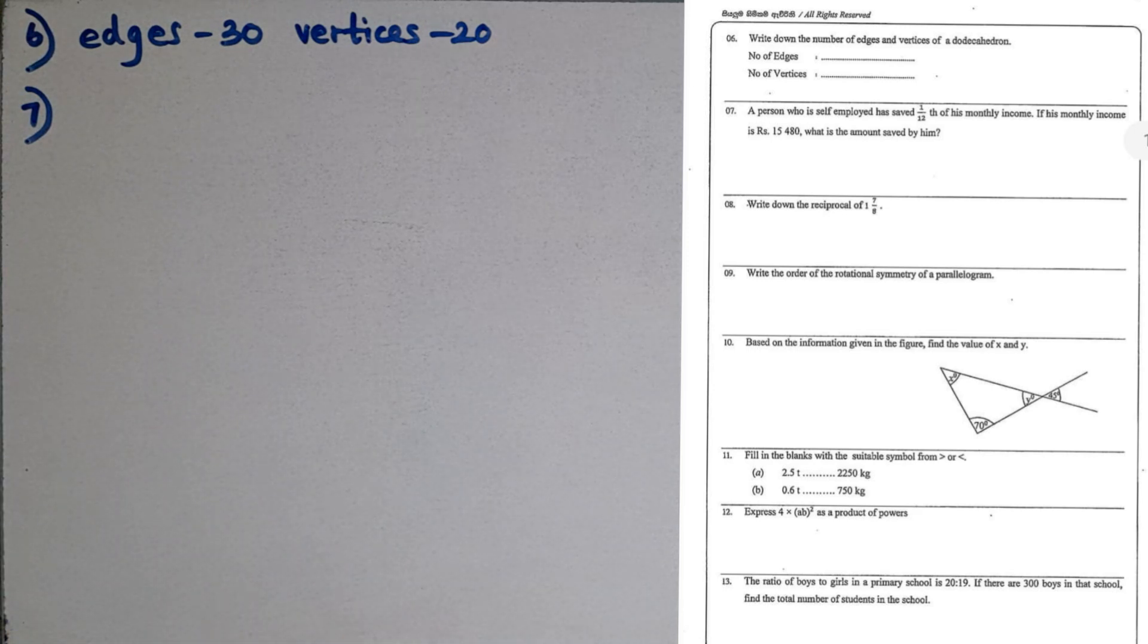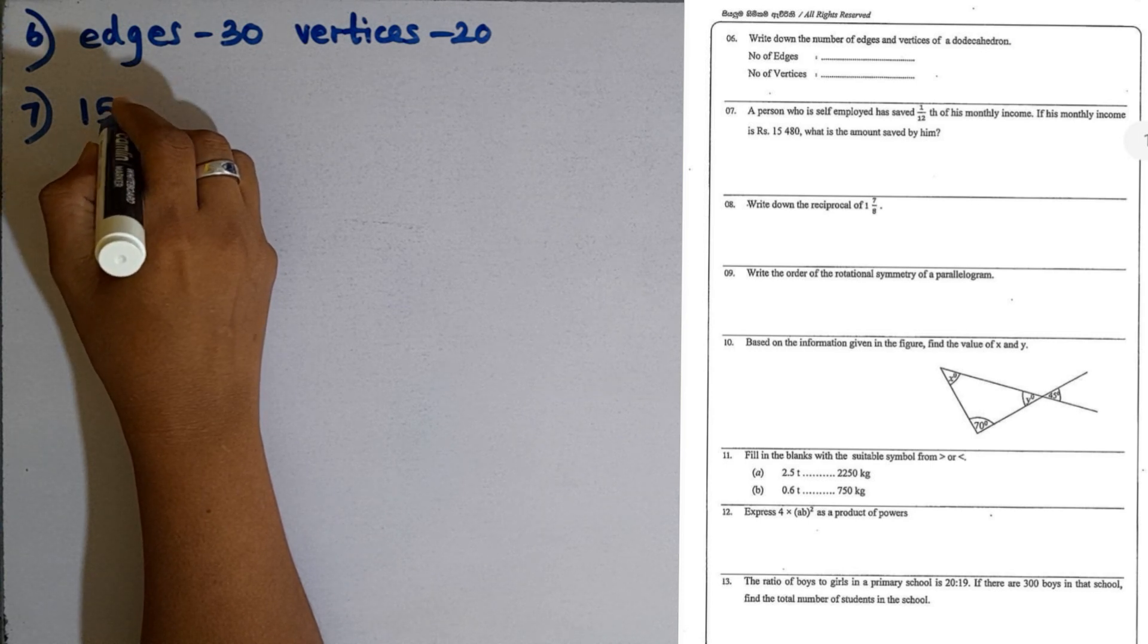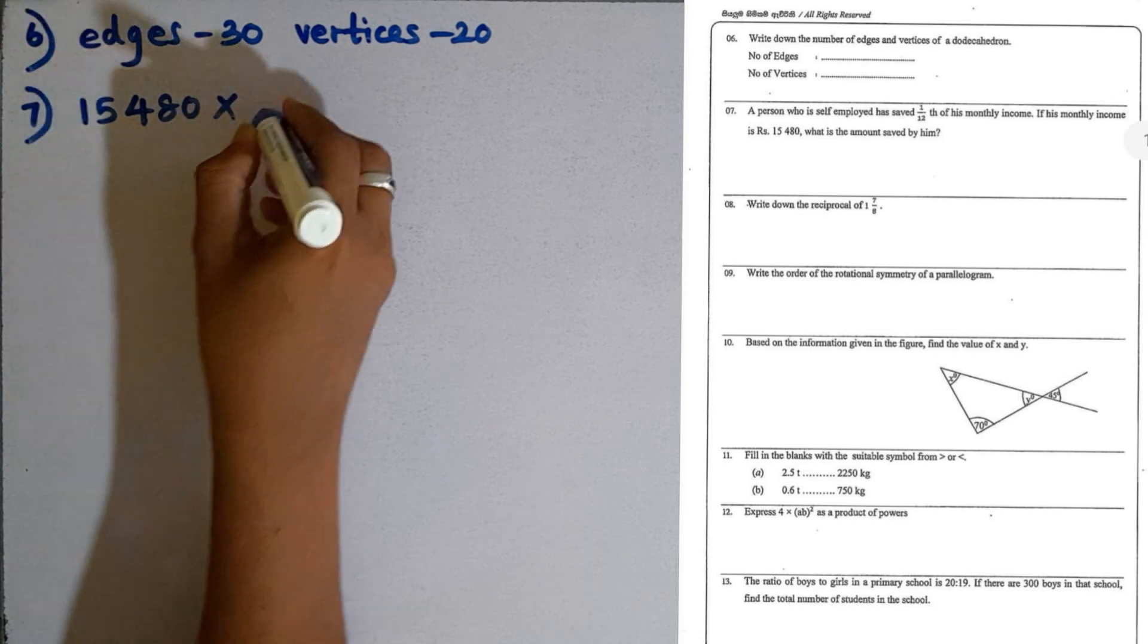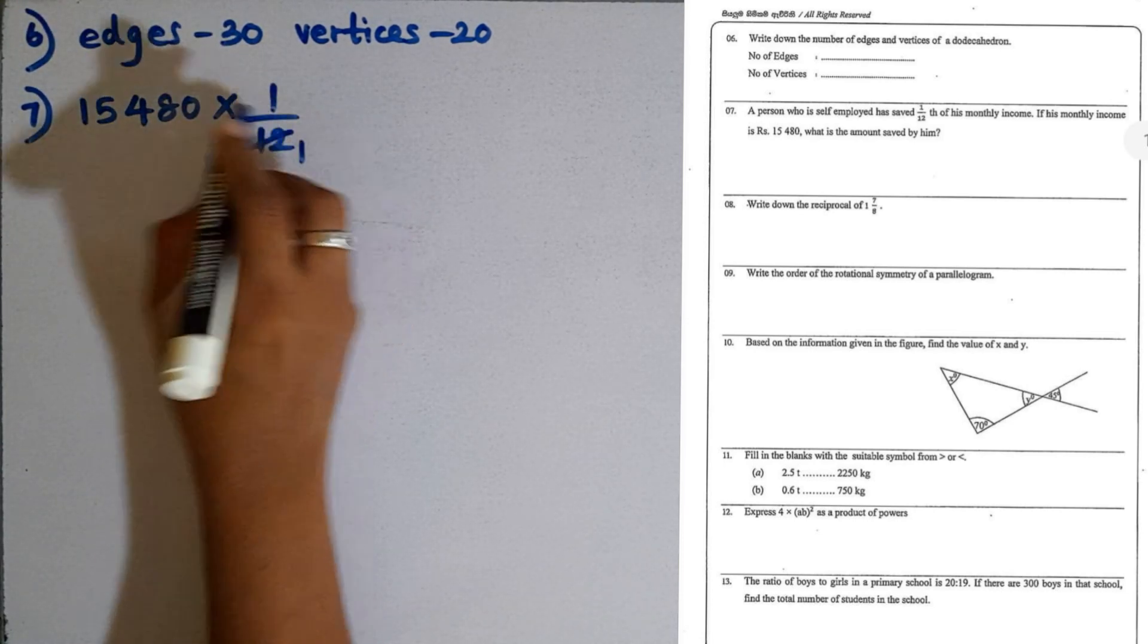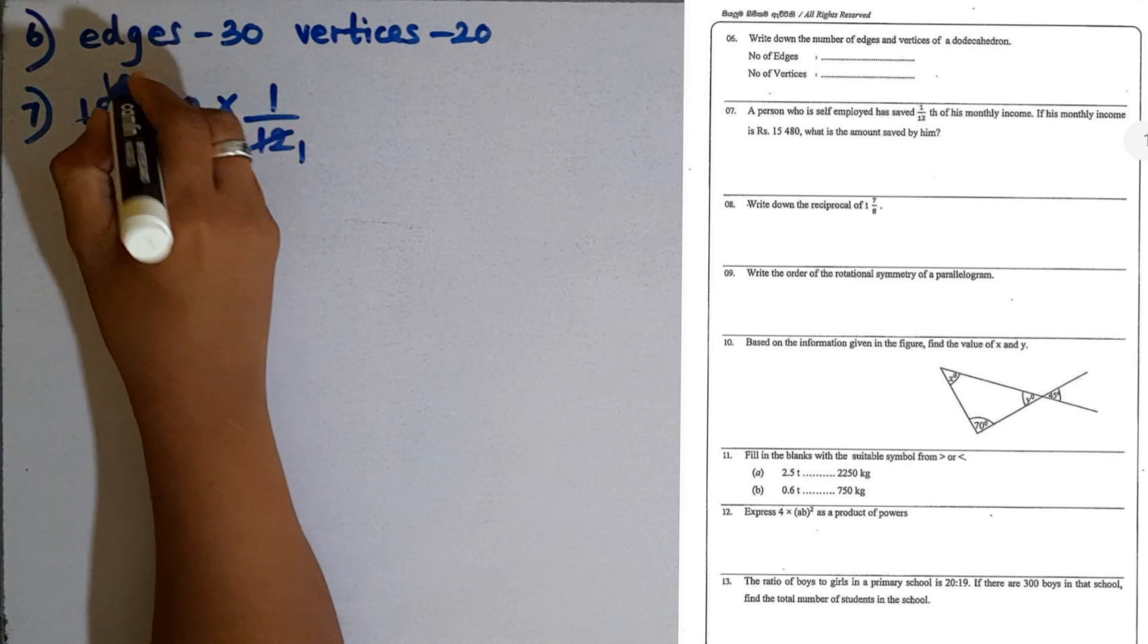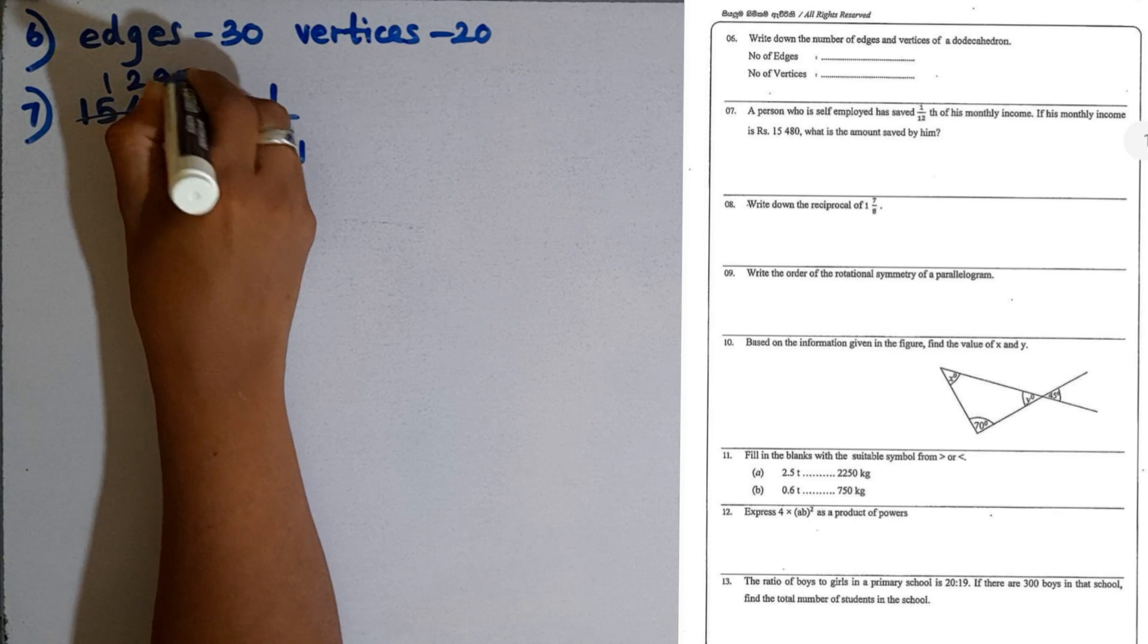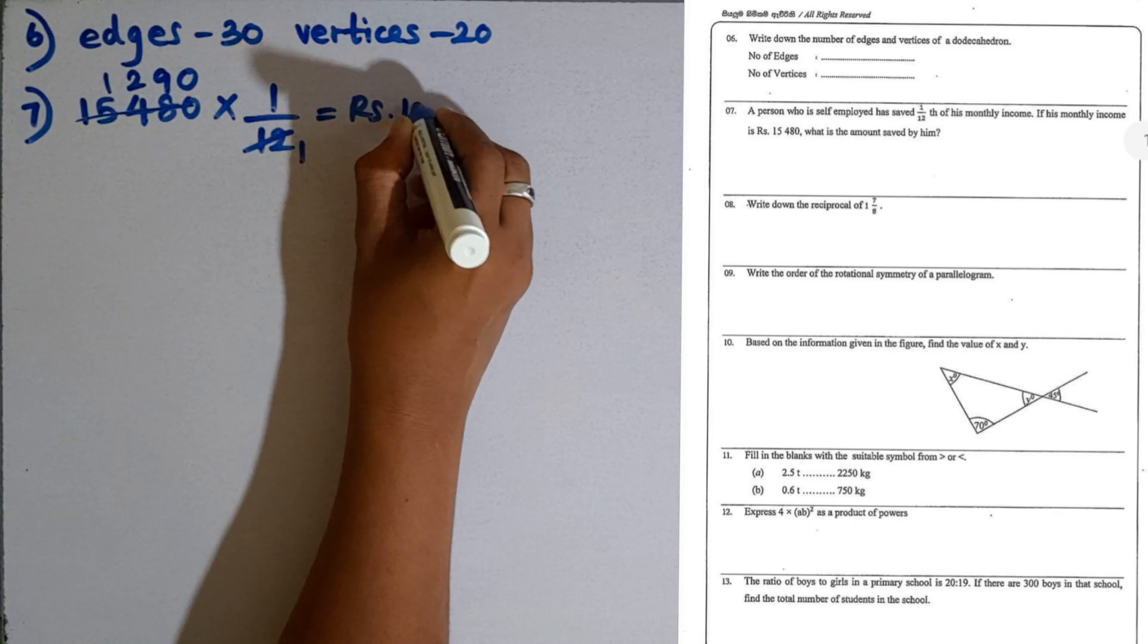Question number 7. A person who is self-employed has saved 1 over 12th of his monthly income. If his monthly income is 15,480, what is the amount saved by him? The monthly income is 15,480. Multiply it by 1 over 12. 12 times 1290 gives the amount as 1290 rupees.